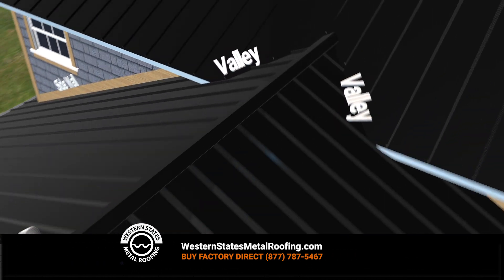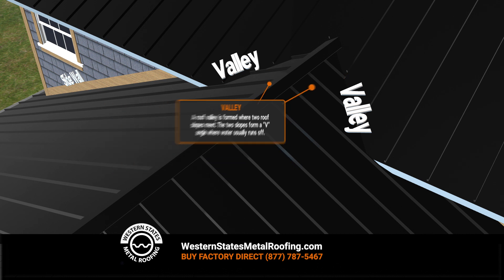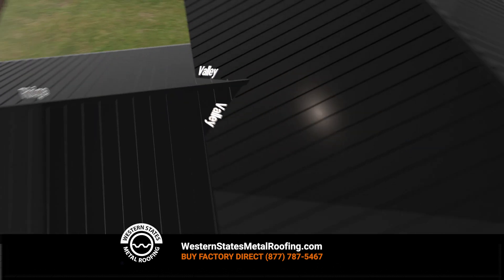A roof valley is formed where two roof slopes meet. The two slopes form a V-angle where water usually runs off.